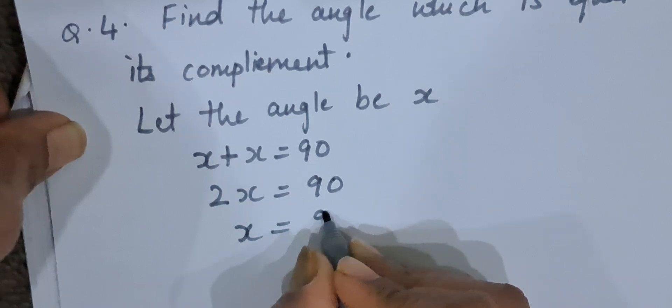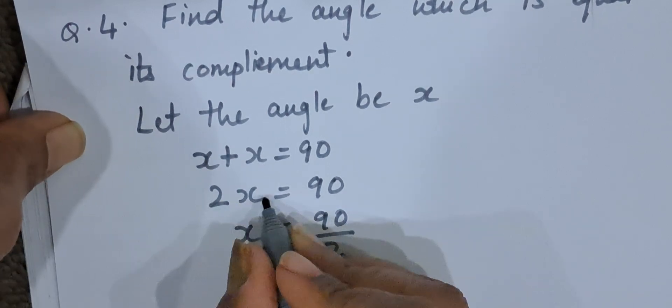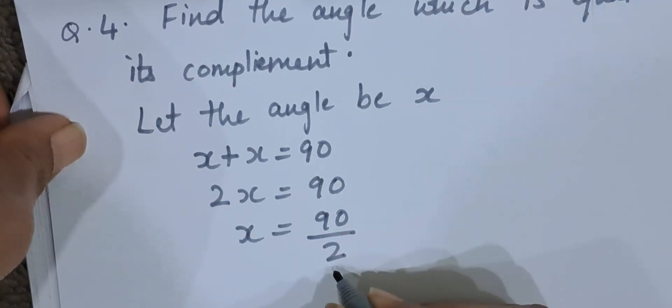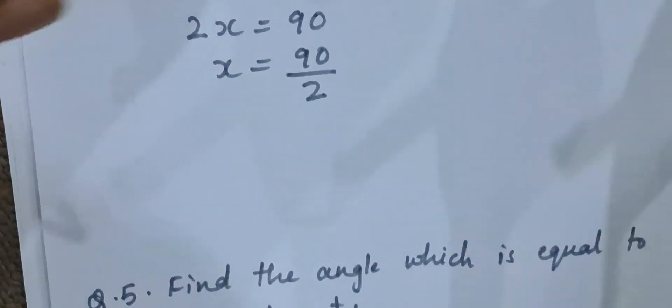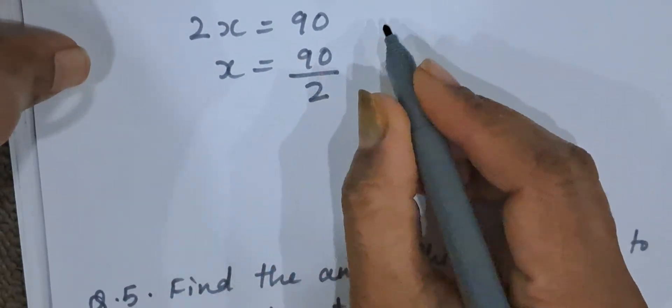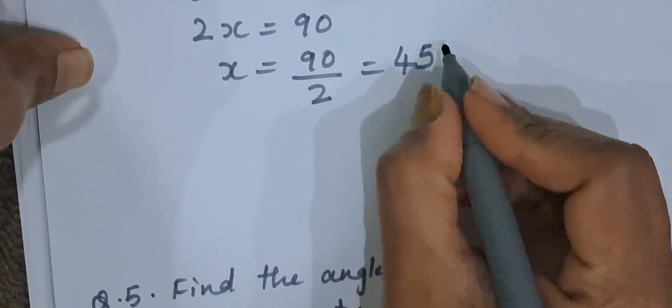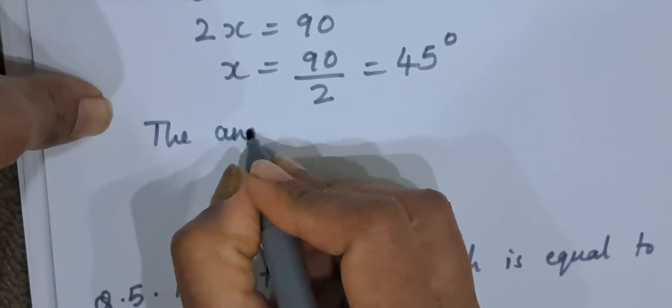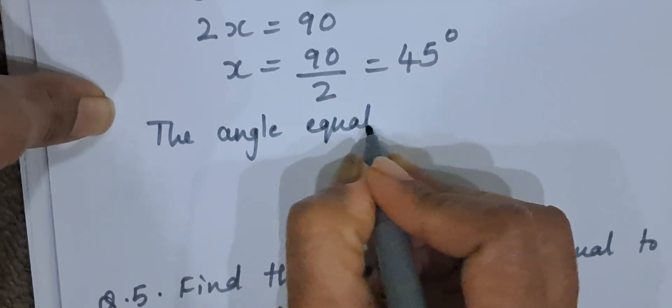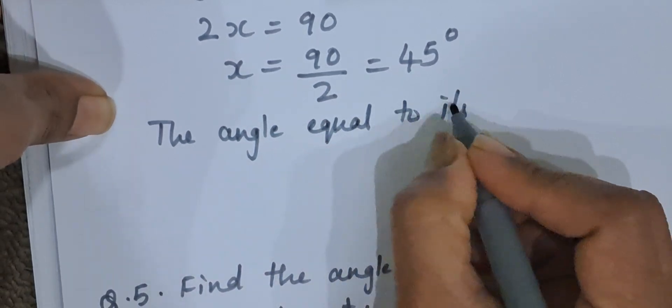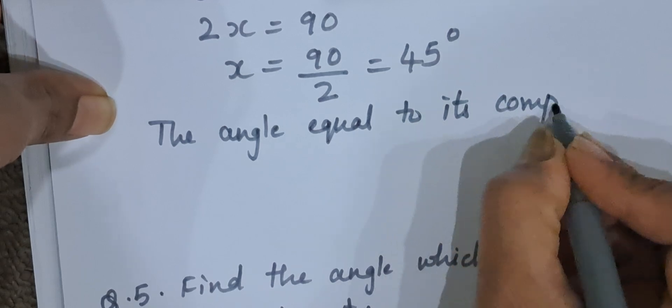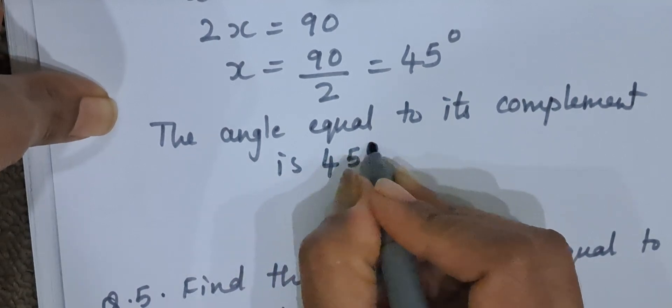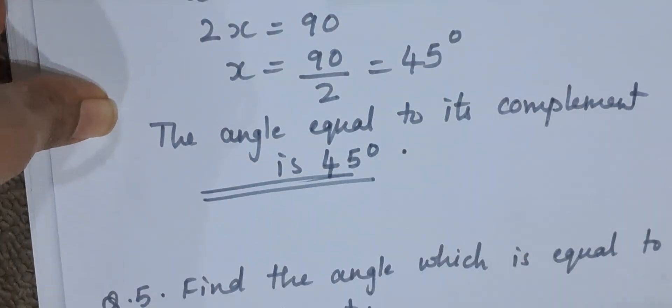So x will be 90 upon 2. 2 is getting multiplied with x, it comes on the right hand side, it divides 90. So x is 90 upon 2. 90 divided by 2 is 45. So x is 45 degrees. The angle is 45 degrees. This is the answer for the fourth one.